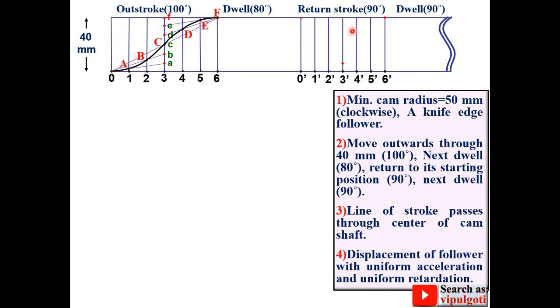So first divide the vertical center line of the return stroke into six equal parts. And give the name as A dash, B dash up to F dash. Join 6 dash-A dash, 6 dash-B dash, 6 dash-C dash and you can understand the remaining work. Now mark the intersection points as G, H, I, J, K and L.